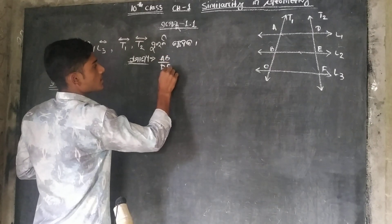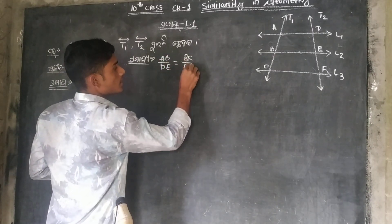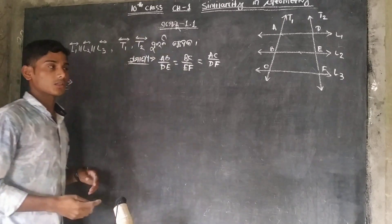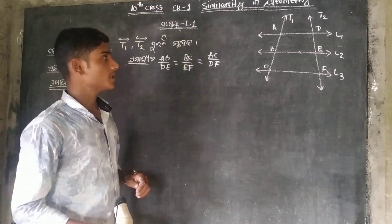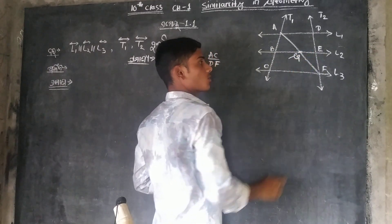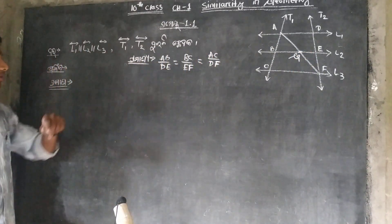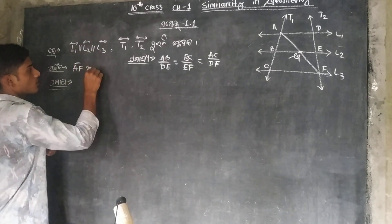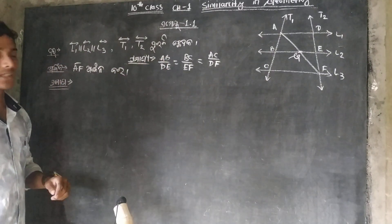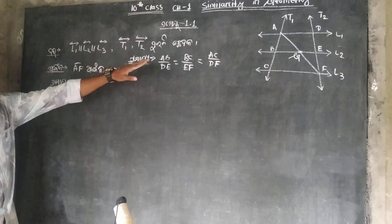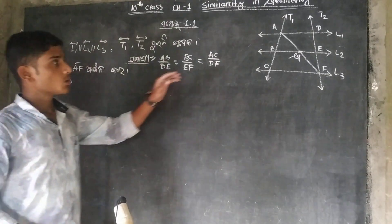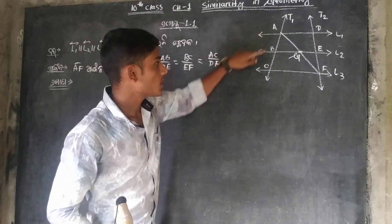FB by DE is equal to BC by EF, and A is equal to SE by DF. So, this is the pramanyan. Based on this, we look at the pramanyan, and we can see this tribunal.